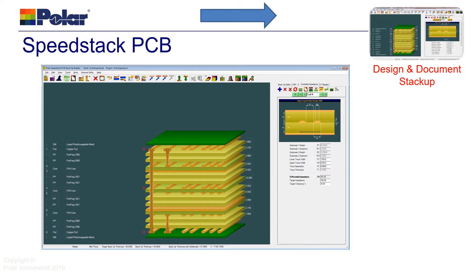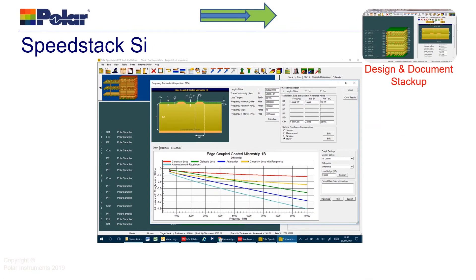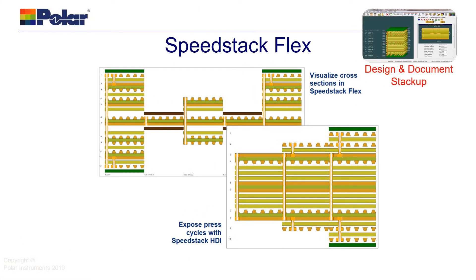It's a simple step to go from SpeedStack into the SpeedStack report, which looks like this — giving you a professional document of the materials, impedance structures and drills on your stack-up. SpeedStack SI adds the ability to document the transmission line losses in addition to the impedance control data. SpeedStack Flex allows you to document complex rigid flex PCBs with as many cross sections as you require, and SpeedStack HDI allows you to expose the individual lamination cycles of an HDI PCB.